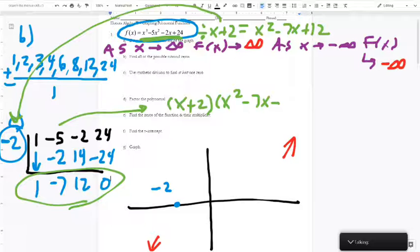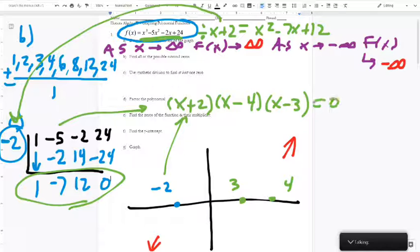So two numbers that multiply to 12 and add to negative 7 will be negative 4 and negative 3. So now I'm going to put those on my number line. So there's a 3 and a 4. Because those are the zeros of these factors. If I plug negative 2 in there, I get 0. If I plug 3 in there, I get 0. If I plug 4 in there, I get 0. And this is what f of x equals.